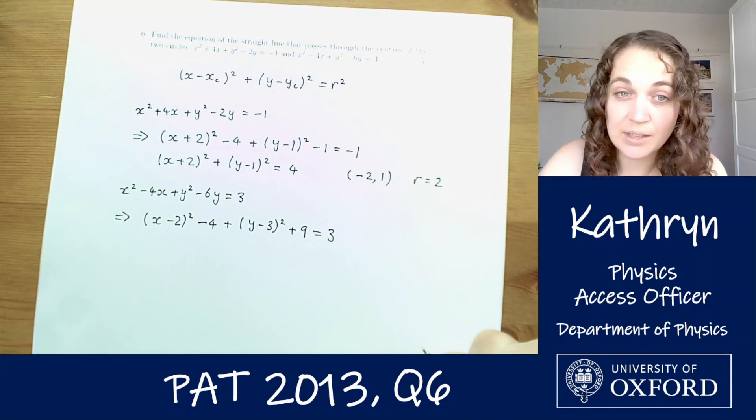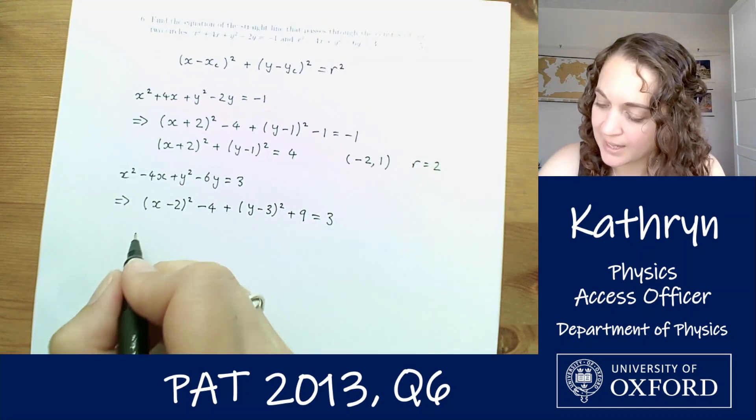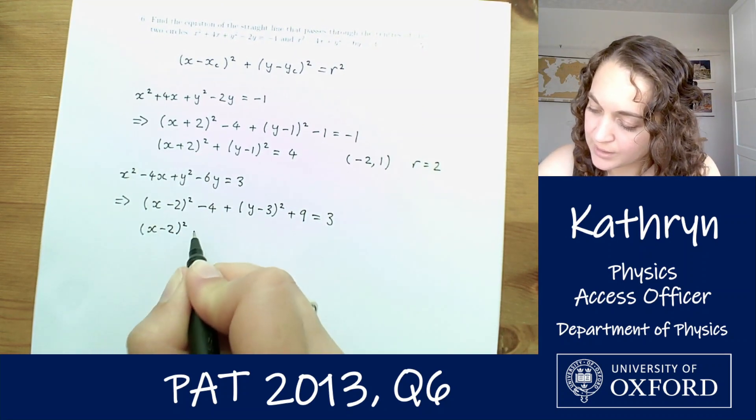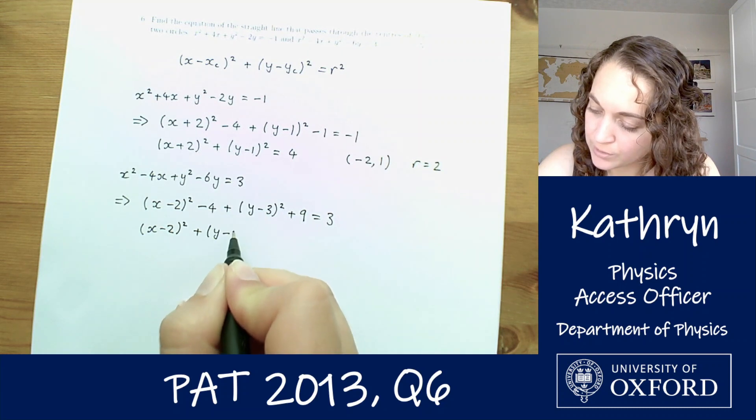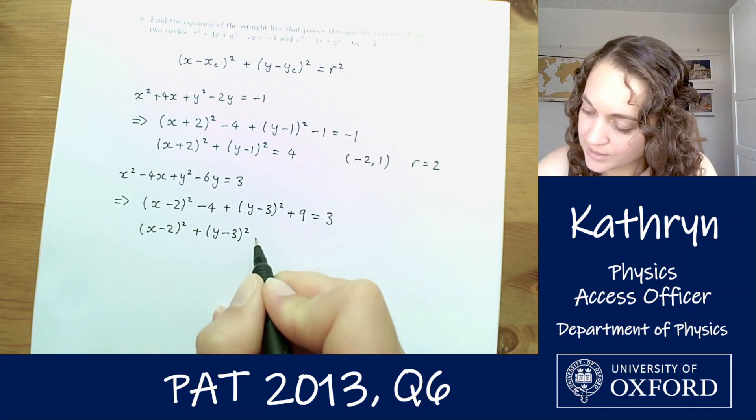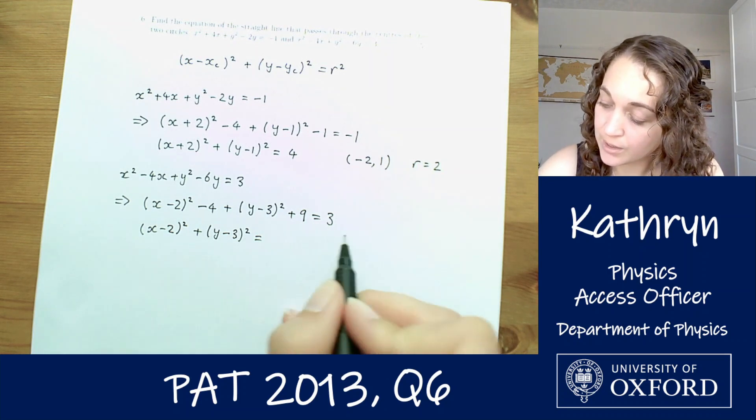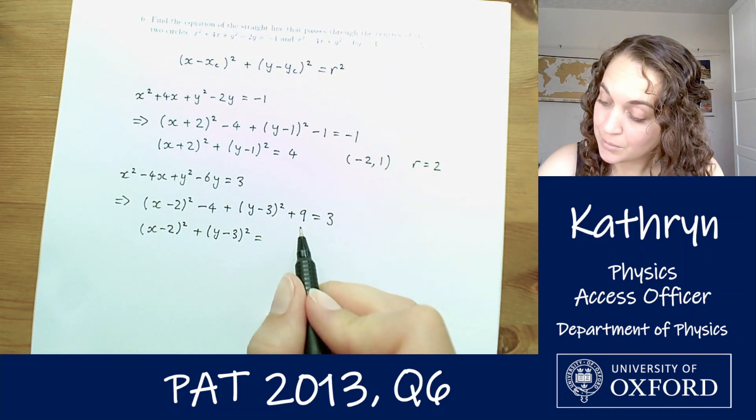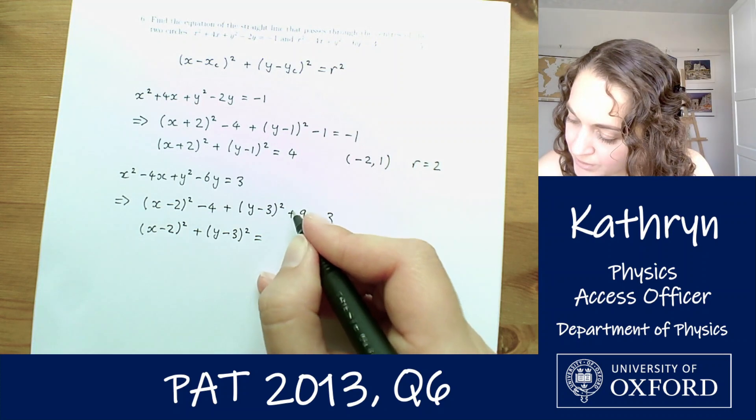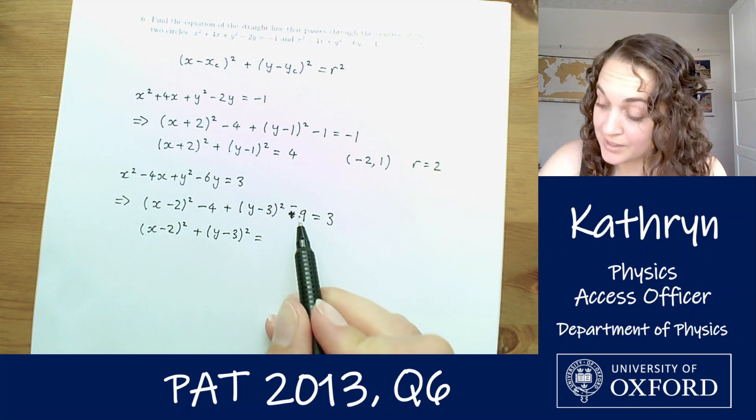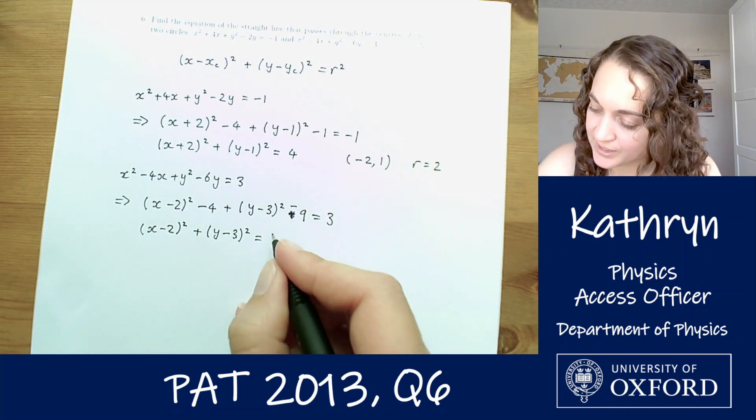And then doing the final little bit of rearranging on that, so keeping the brackets, we've got x minus 2 squared plus y minus 3 all squared equals 3 plus 9, which is 40, sorry, 3 minus 9, sorry, that should be a minus. My mistake. 3 plus 9 plus 4, which is 16.